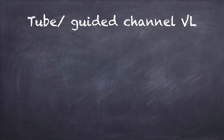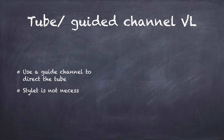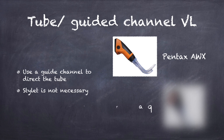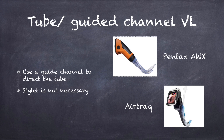Tube or guided channel video laryngoscopes use a guide channel to direct the tube into the glottis. A stylet is not required for these devices. Examples include Pentax AWS and Airtraq.